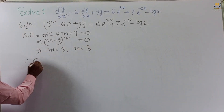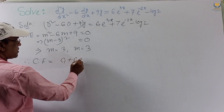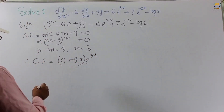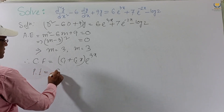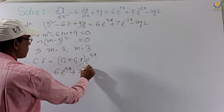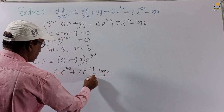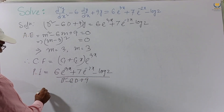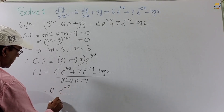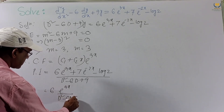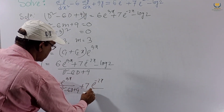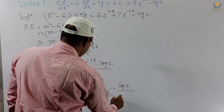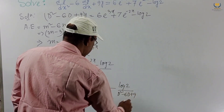Since the roots are equal (m = 3, 3), the complementary function is (c₁ + c₂x)e^(3x). Now for the particular integral: P.I. = [6e^(2x) + 7e^(-2x) - log2] / (D²-6D+9). We separate this into three parts: 6e^(2x)/(D²-6D+9) + 7e^(-2x)/(D²-6D+9) - log2/(D²-6D+9).